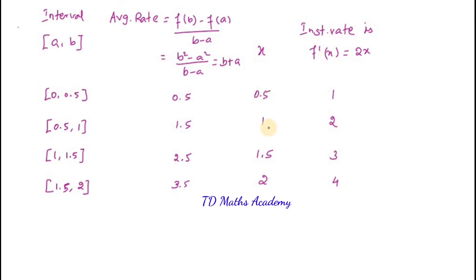For the instantaneous rate of change, find f dash of x equals 2x. Substitute each x value: at x equals 0.5, 2 into 0.5 equals 1. At x equals 1, 2 into 1 equals 2. At x equals 1.5, 2 into 1.5 equals 3. At x equals 2, 2 into 2 equals 4. So the instantaneous rates are 1, 2, 3, and 4.